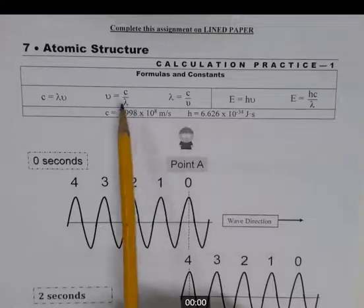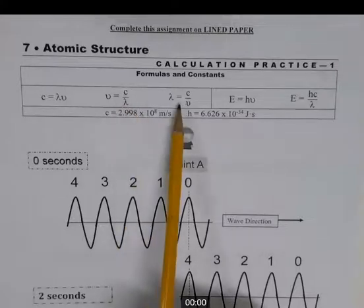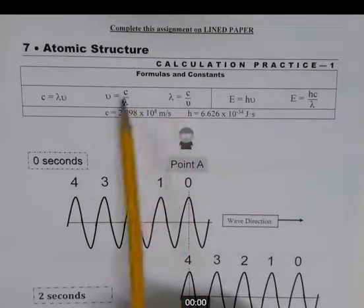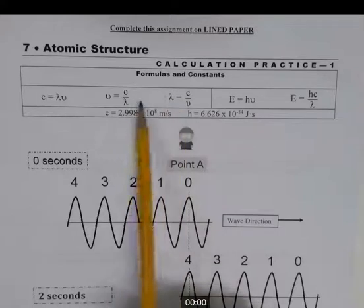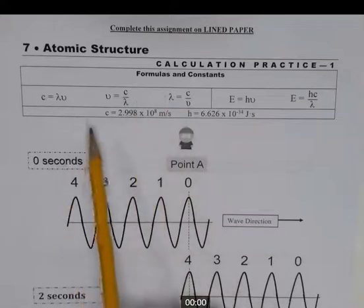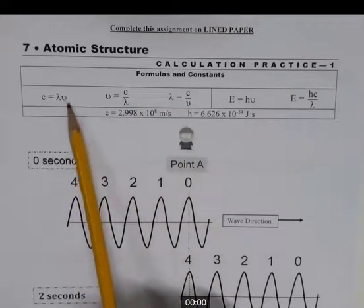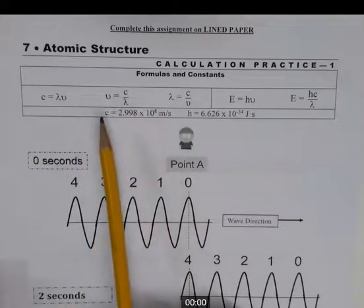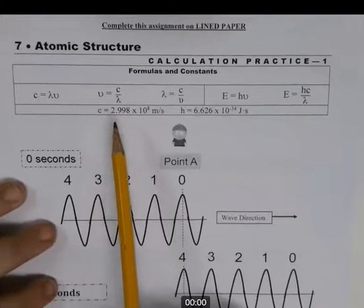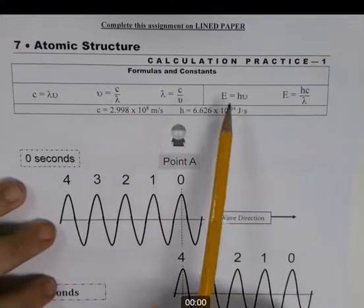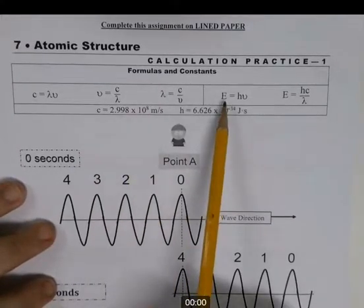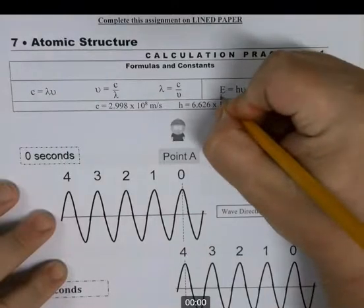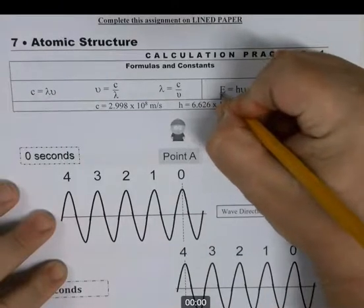Since these have to equal a constant — 3 times 10 to the 8th — as one goes up the other goes down. These are just the same two equations transposed; you should know the algebra to do that. You should be given just one and know how to solve for nu and for lambda.